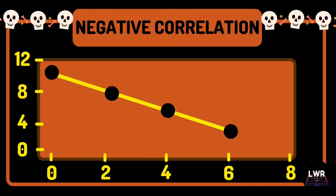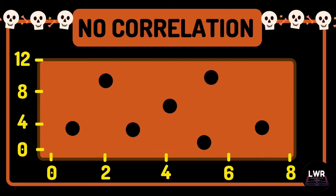This is how a negative correlation will appear in a graph. If the direction of the plotted point is a downward slope, then it is interpreted as a negative correlation. And there is no correlation when the plotted points do not have a definite direction, because they are just scattered in the graph.